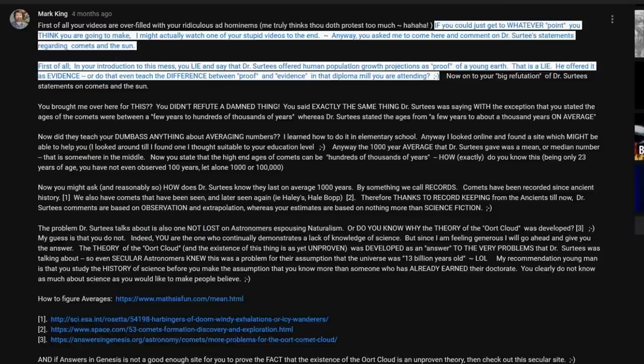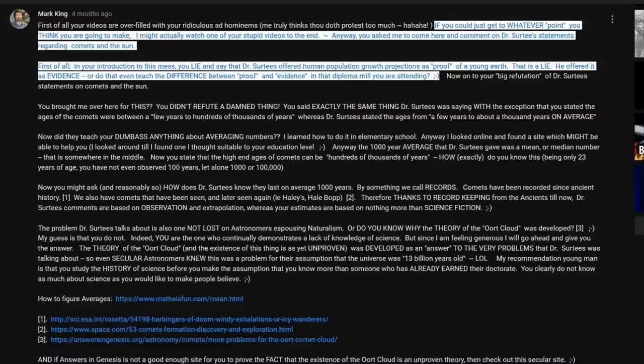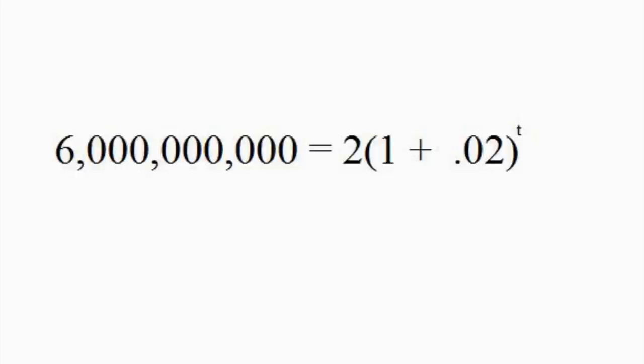Anyway, you asked me to come here and comment on Dr. Surtees' statements regarding the comets in the sun. First of all, in your introduction to this mess, you lie and say that Dr. Surtees offered human population projections as proof of a young earth. That is a lie. He offered it as evidence. Or did they even teach the difference between proof and evidence in that diploma mill you're attending? I don't care. You cannot defend this argument. No matter how you spin it, there is no end to the stupid of the creationism population growth argument. Now can we please talk about something else?